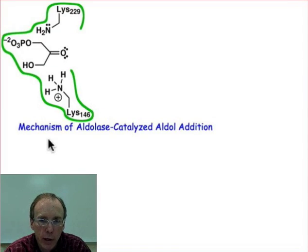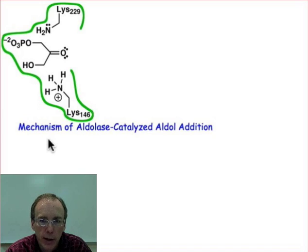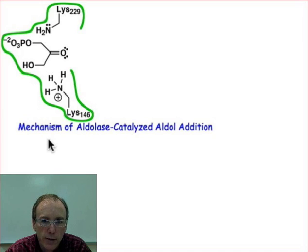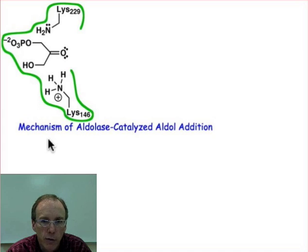Next we want to look at the mechanism of the aldol reaction catalyzed by this aldolase enzyme. We've already seen how one stereocenter must be set, and we need to do the addition to glyceraldehyde 3-phosphate with control over which face gets attacked. We talked about the need to attack the psi face. Before we discuss how that second stereochemical configuration in fructose bisphosphate comes about, let's work through the mechanism so we see the intermediate involved right before that stereocenter is set.